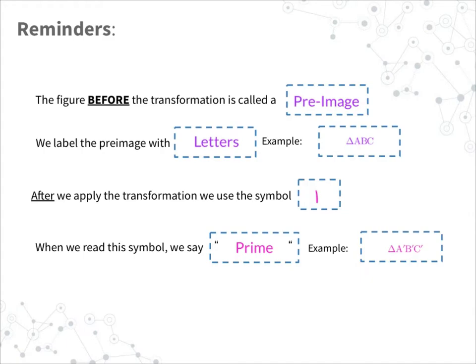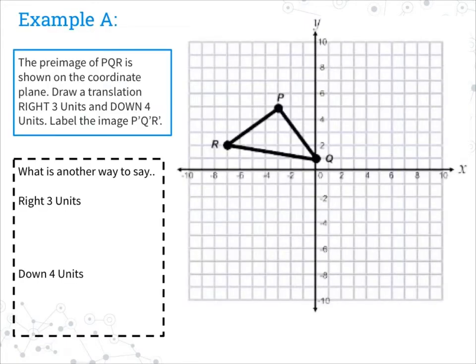Here we are at example A. It says the pre-image of PQR is shown on the coordinate plane — draw a translation right three units and down four units, and label the image P prime, Q prime, R prime. So we're going to be doing a translation here, or another word for that is slide. We're going to go right three units and then down four. The easiest way to do this when we have the image on the graph is to just count. Starting with P, we go right one, two, three, and down four — one, two, three, four — and our point is right there. We're going to label it P prime.